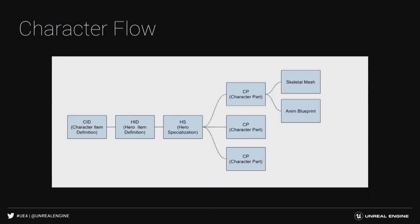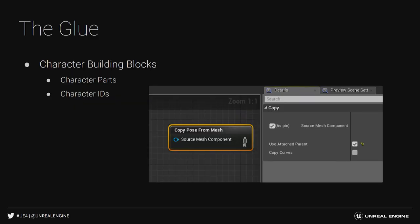Zooming out further, we see what makes up a character in its entirety. There is a Character Item Definition, Hero Item Definition, Hero Specialization, and multiple Character Parts — all Data Assets. Once we get into Character Parts, that is where technical animators start working, adding references to Animation Blueprints, SkeletalMeshes, and Skeletons. This can get quite complex on Progressive Characters — a Viking or Pirate character may have five or ten tiers, each with individual SkeletalMeshes, Skeletons, Animation Blueprints, and Character Parts, which gets unwieldy to carry across the finish line.